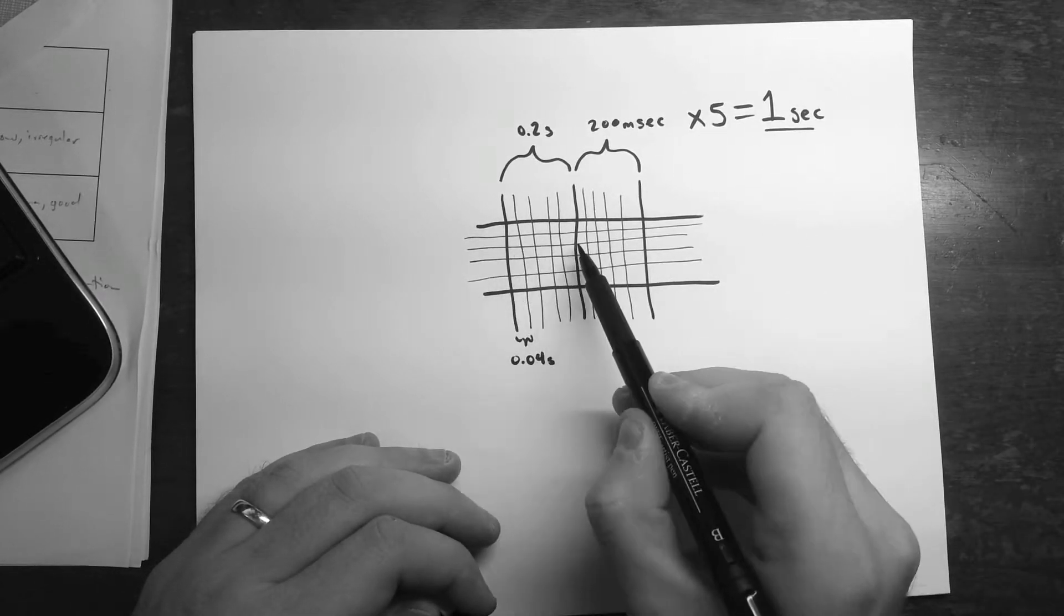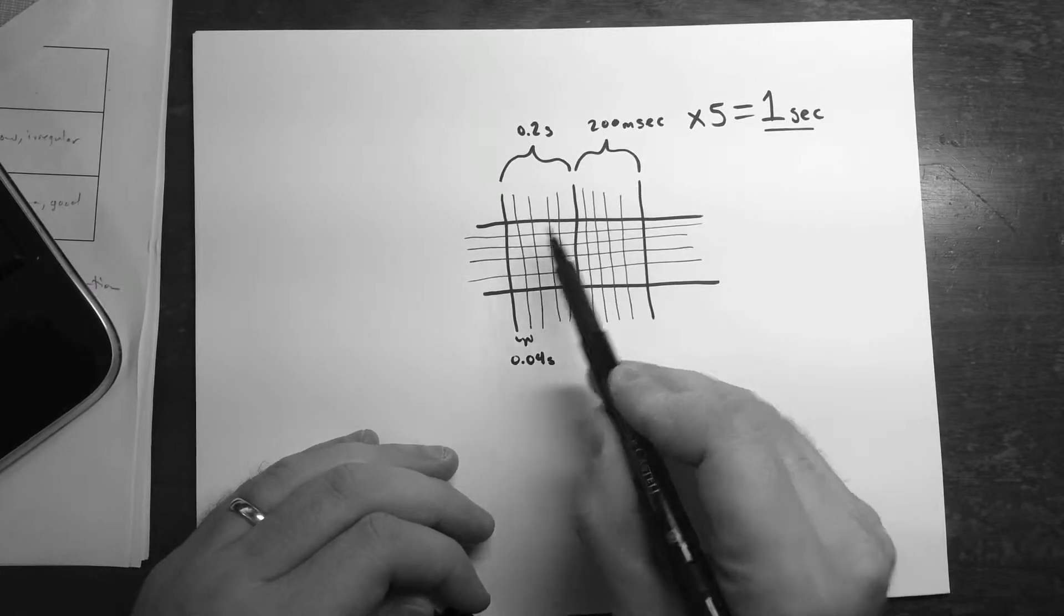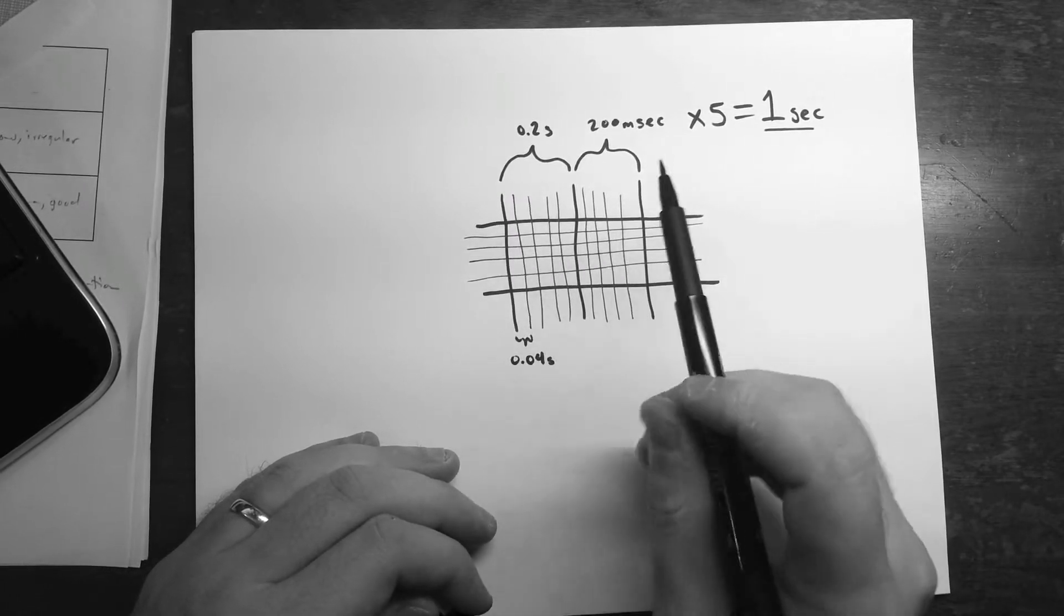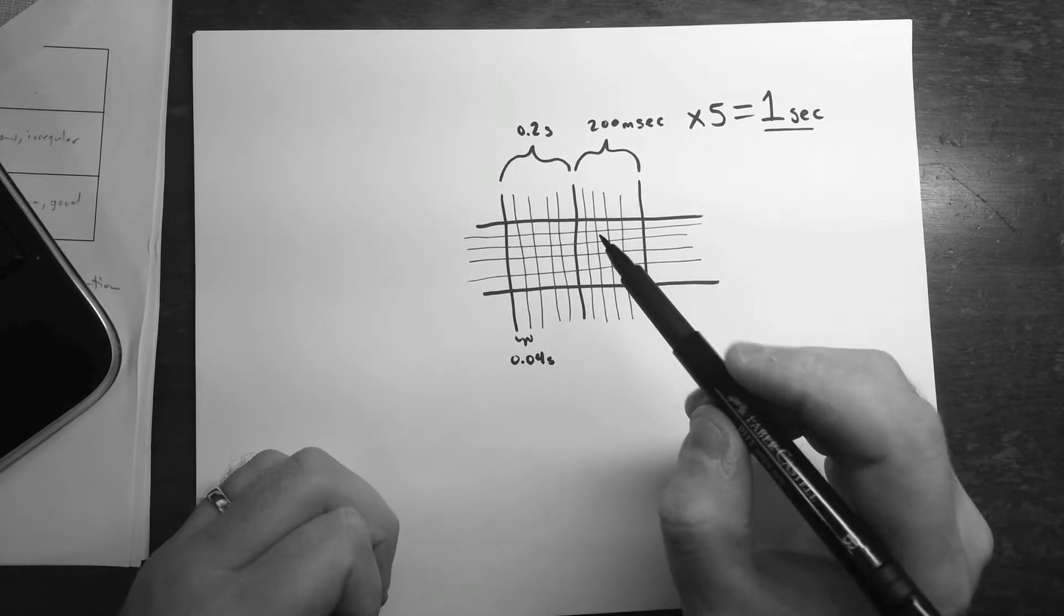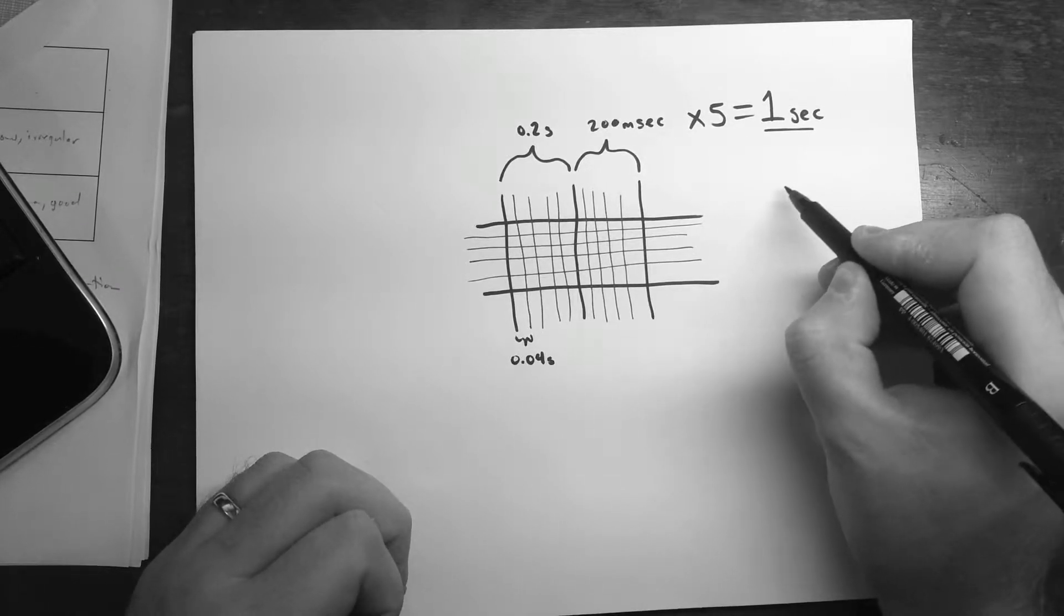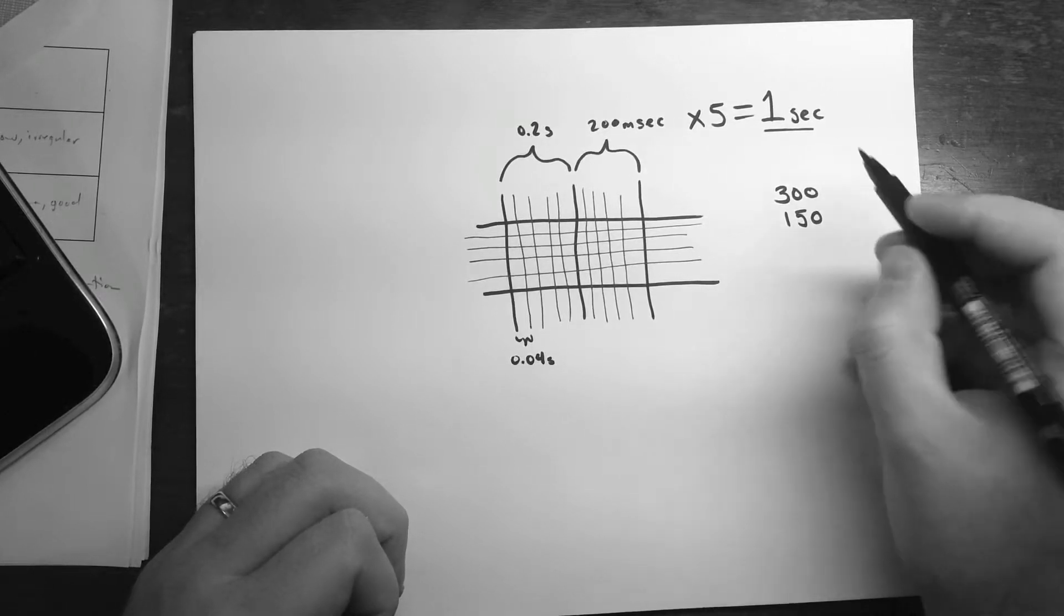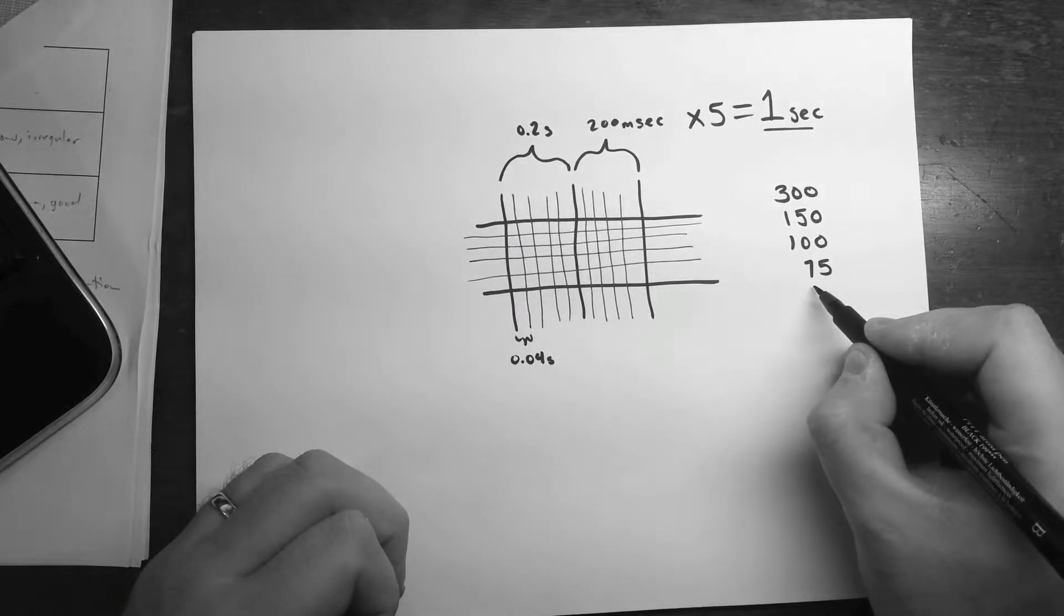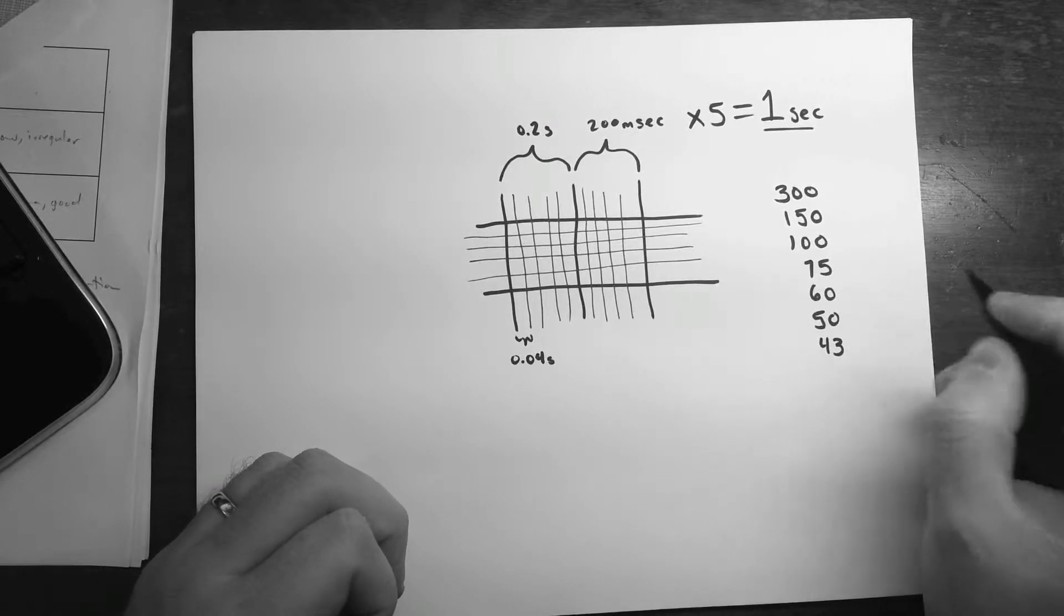So one big square is good to know because that is the largest that a PR interval should ever be. That's just a handy marker. Now, some different ways you can tell rhythm is if you remember these values in order, you'd be able to tell pretty much any rhythm just by glancing. And I'll show you how in a second.